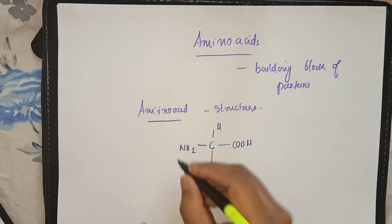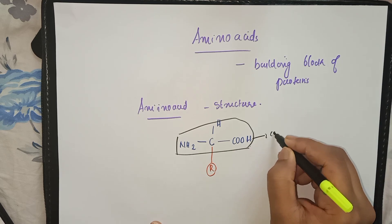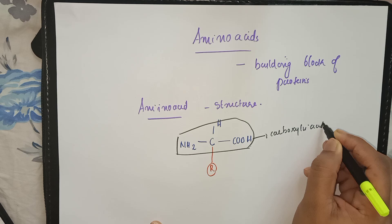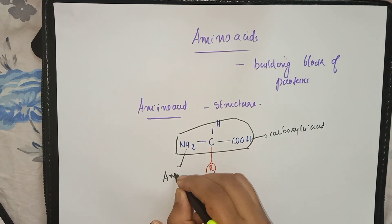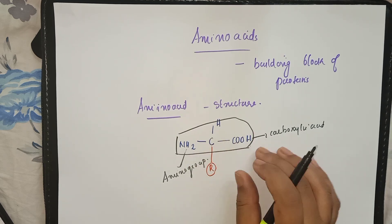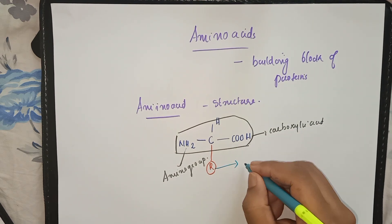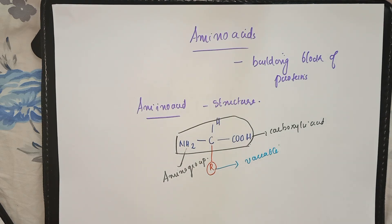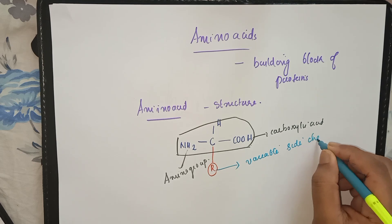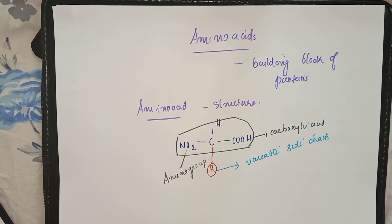The carboxylic acid group, amino group, and hydrogen atom are common to every amino acid. The variable thing is the side chain — this variable side chain determines each and every amino acid and gives it its name. So the common part is the amino group and carboxylic acid group, and the different part is the variable side chain R.